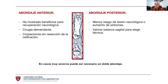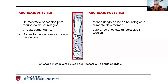Tenemos dos opciones en el abordaje posterior: la laminectomía, que no se recomienda hacer de forma aislada sino acompañada de fusión, y la laminoplastía. Como ventajas de la laminoplastía, es una técnica no muy demandante que conserva algo de movilidad y balance en el paciente, aunque dependemos de un balance sagital adecuado. No es recomendable cuando hay mucho dolor axial acompañante ni artrosis facetaria añadida. En casos muy severos puede ser necesario un doble abordaje, haciendo primero la liberación posterior y posteriormente el abordaje anterior de forma más segura.